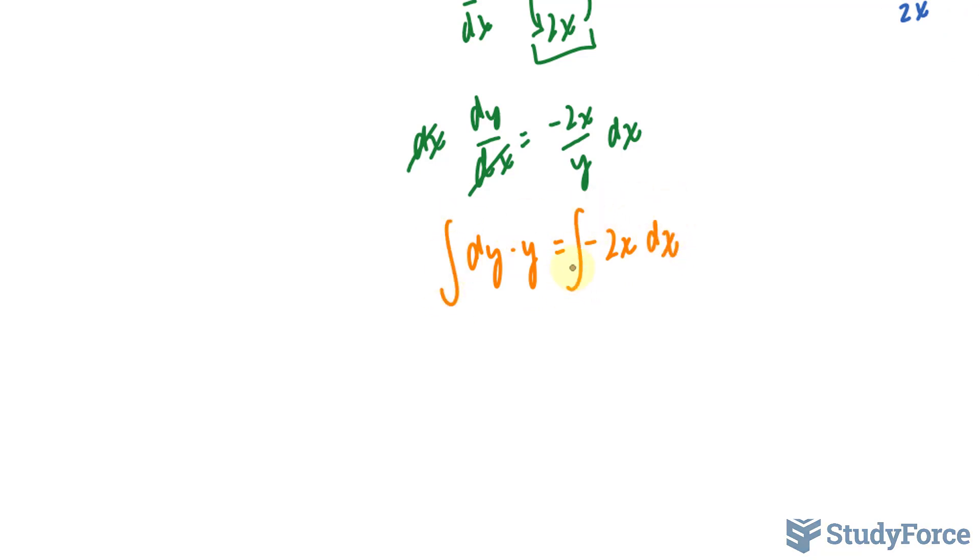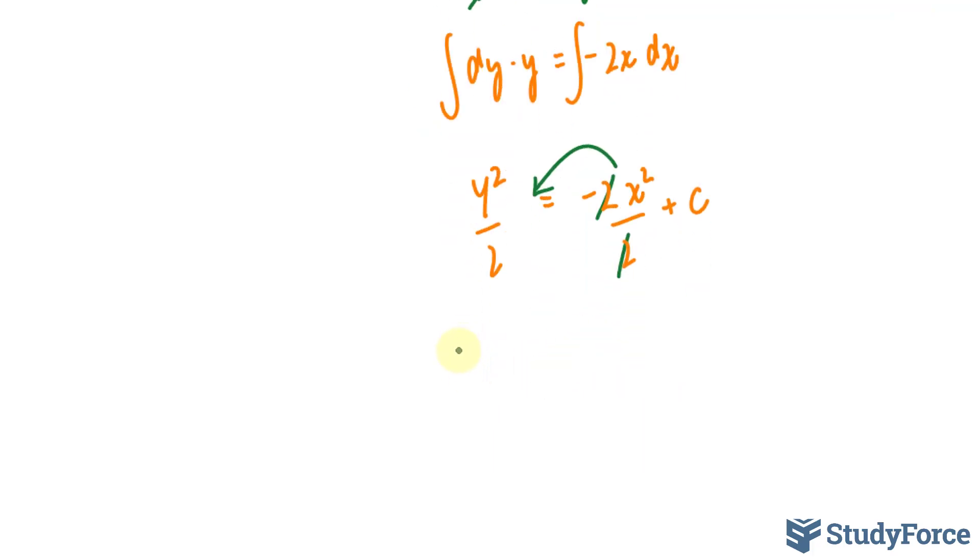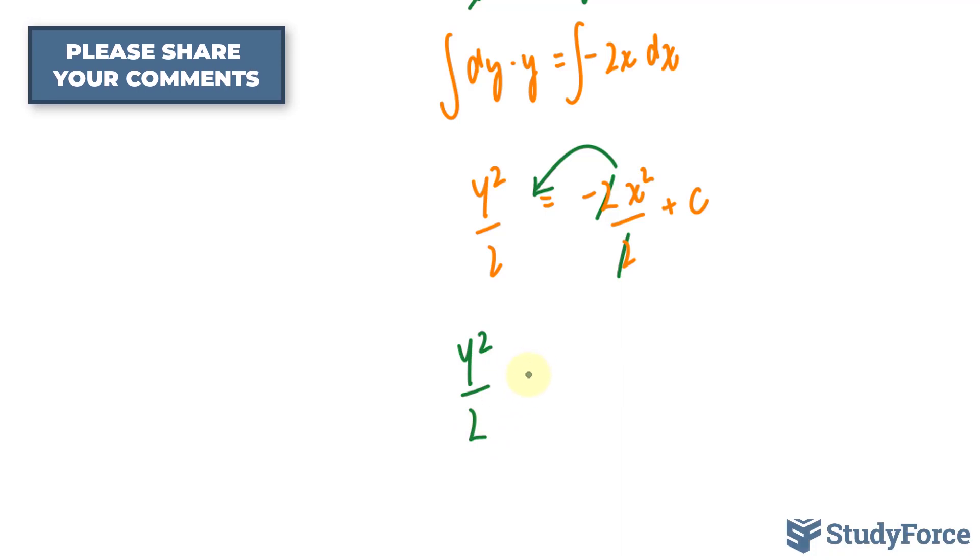Integrating the left side and the right side, these are easy. We end up with y²/2 on the left side. And on the right side, we end up with -2x²/2 + c. This cancels out, leaving me with -x² + c. Bringing that over, and we end up with y²/2 + x² = c.